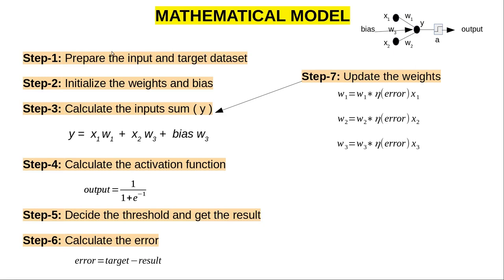Now let's look at the mathematical model steps. This is very important because in the next video I will talk about the code part, and we will use these steps. Step one: prepare the input and target dataset. This is the training phase. We give inputs and, with the model — which we define including weights, bias, and everything — at the end we expect the model to be able to take any new data and calculate the expected output.